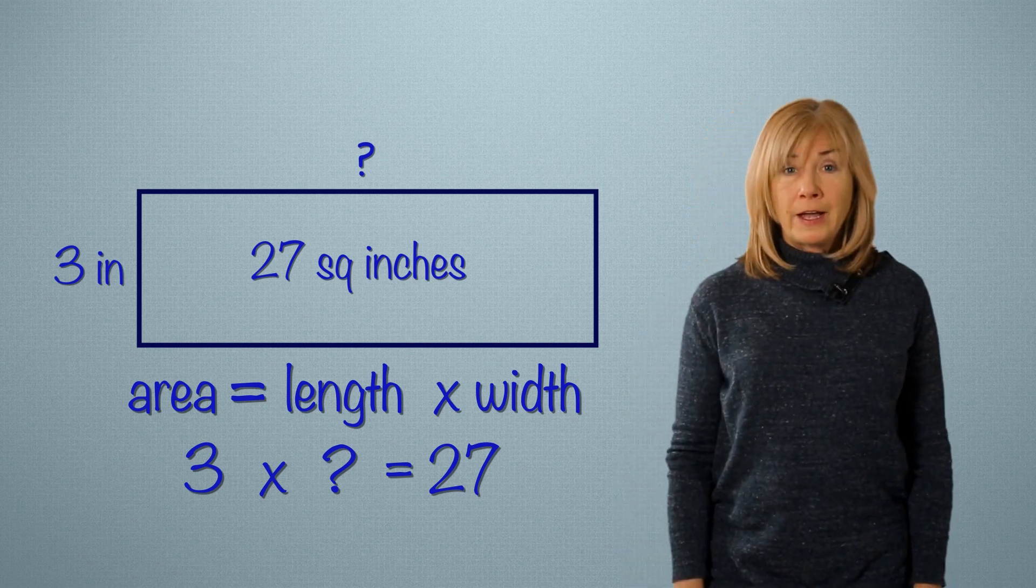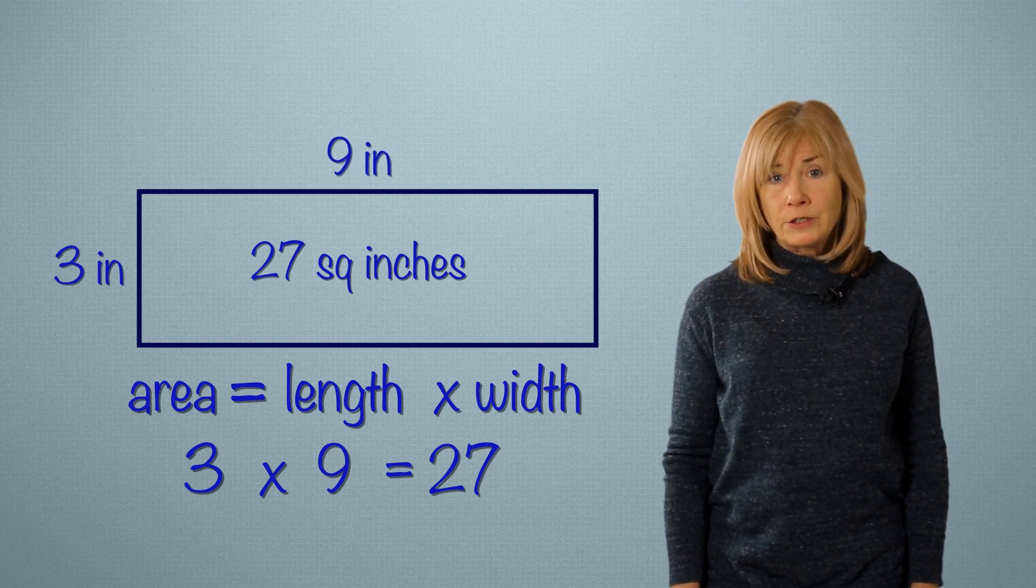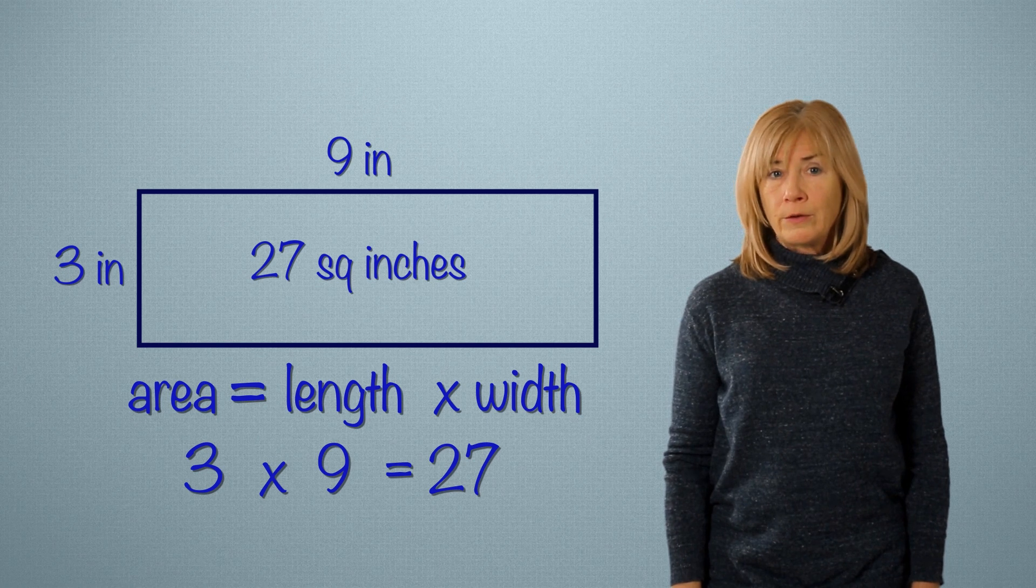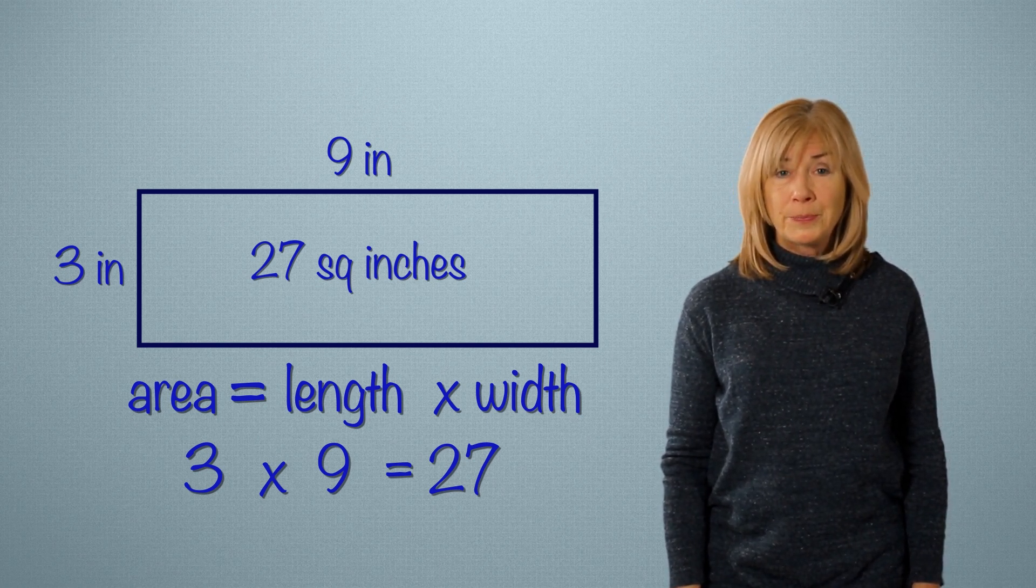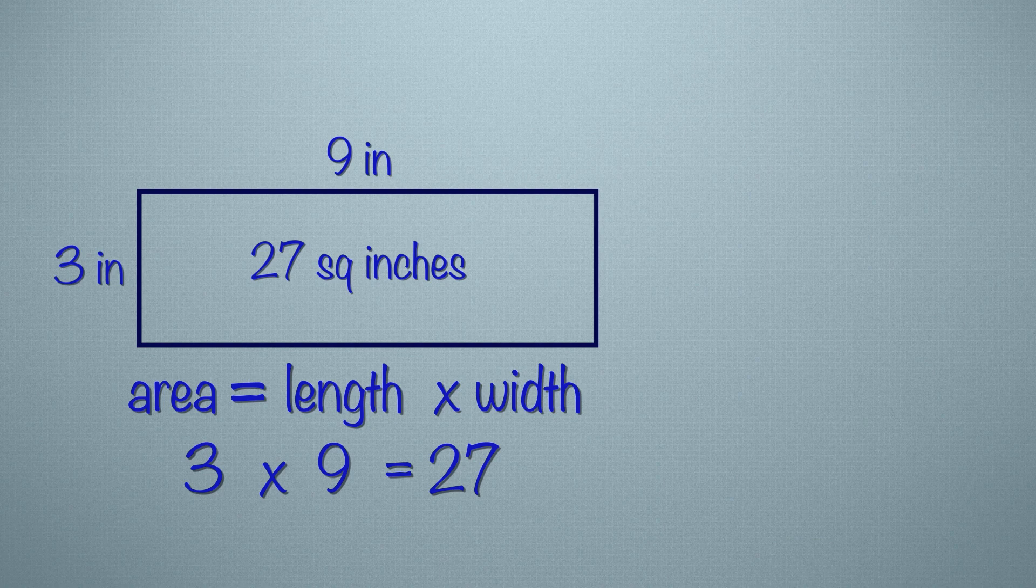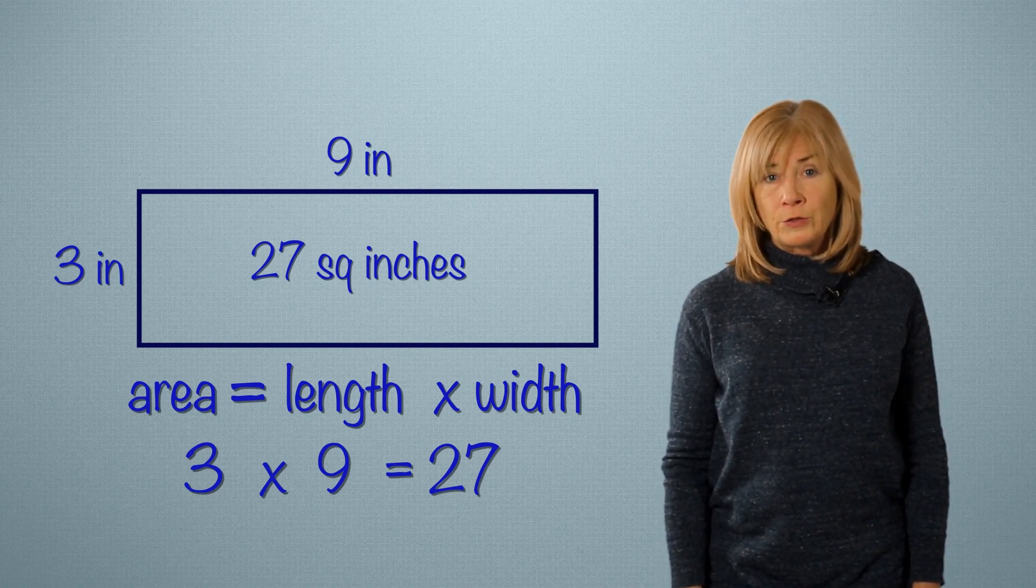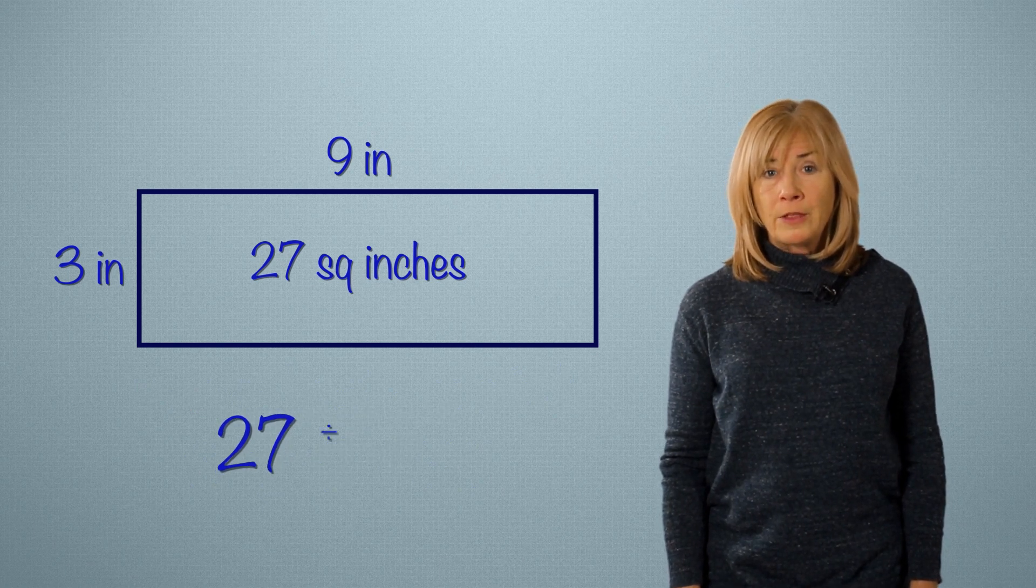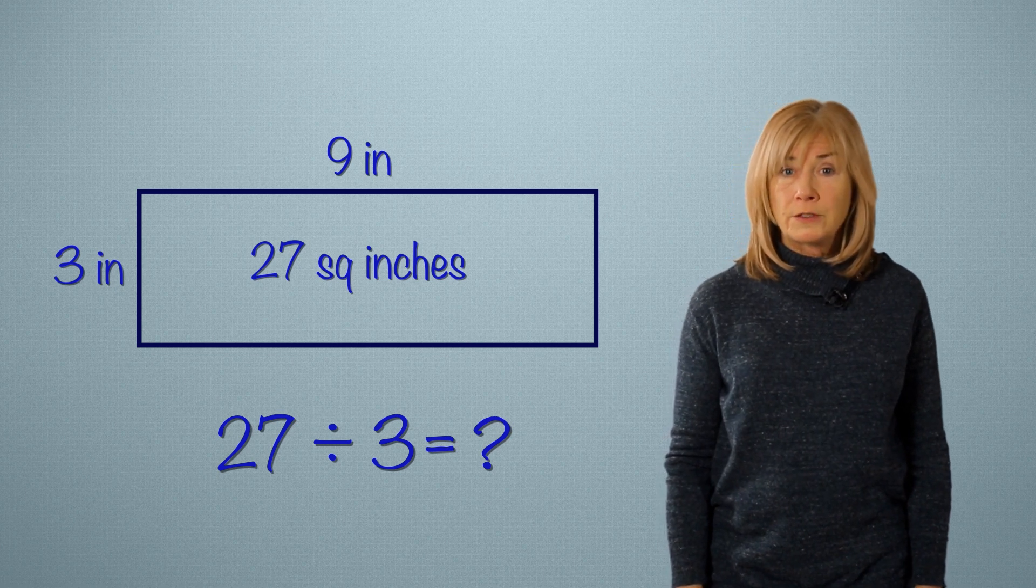3 times 9 equals 27. The missing length is 9 inches. Now, can you express this problem as a division sentence? To make this a division sentence, we will divide the total area by the known side length and our unknown becomes the quotient.